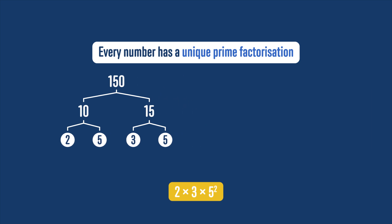We could instead have started by splitting 150 into 2 and 75, and then 75 into 25 and 3, and 25 into 5 and 5, but whichever order we do this in, we will always get to the same prime factorisation of 2 times 3 times 5 squared.